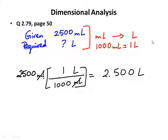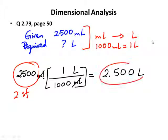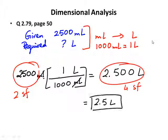Now for significant figures: the given measurement 2500 has two significant figures, but the answer as written — 2.500 liters — has four. Conversion factors do not affect sig figs; the answer is determined by the sig figs in the given data. We rewrite the answer as 2.5 liters, giving two significant figures.